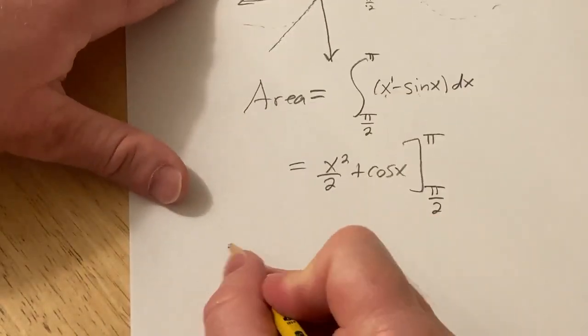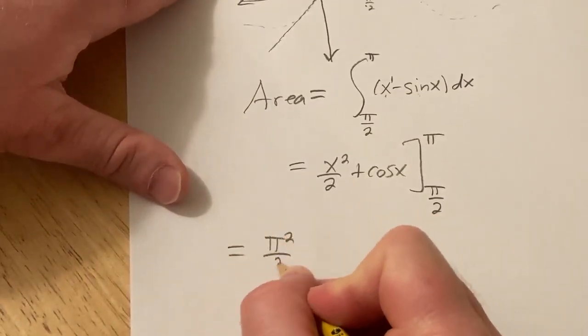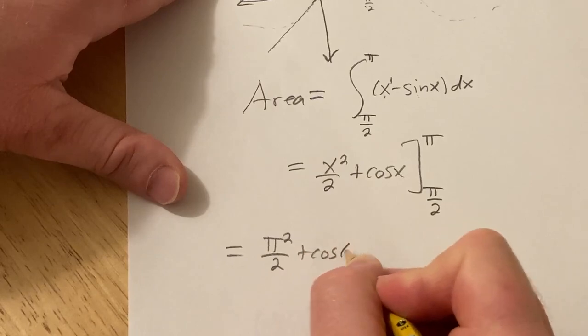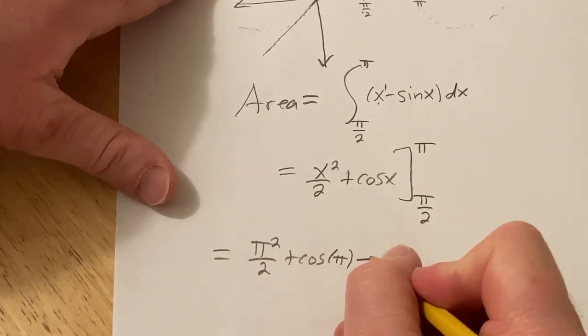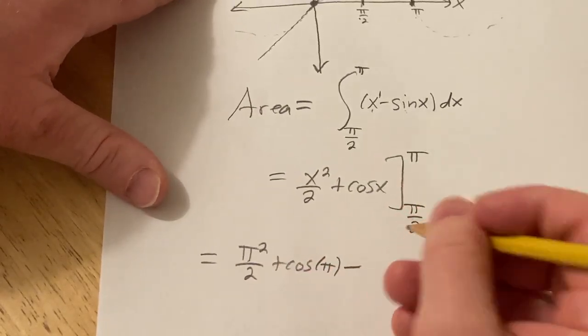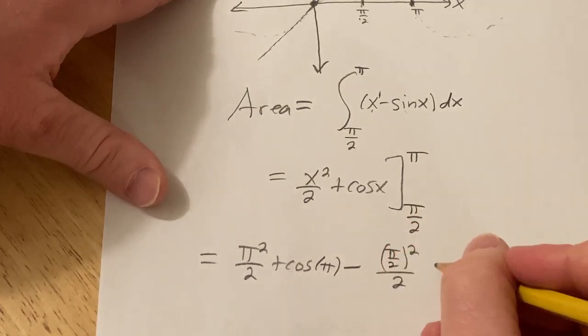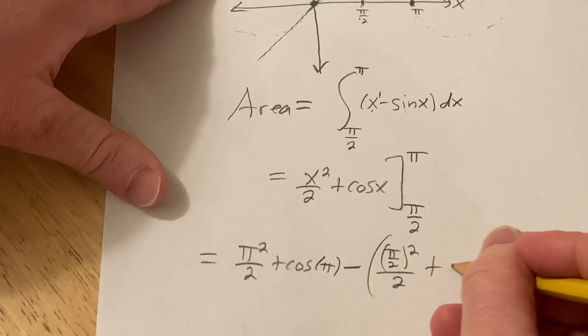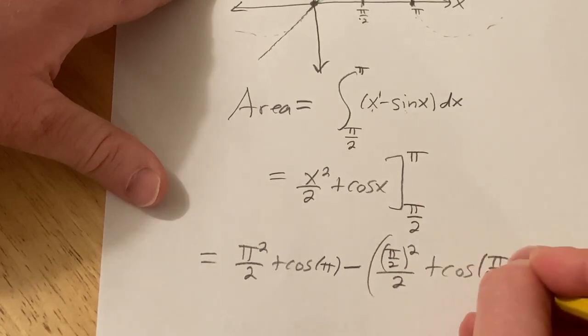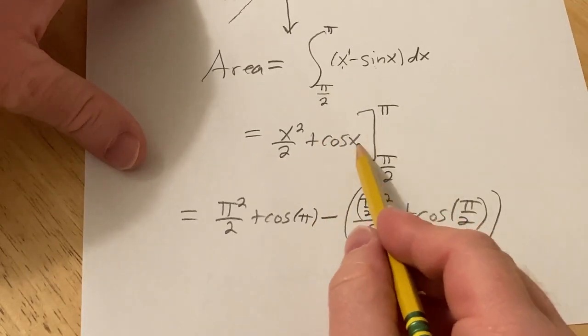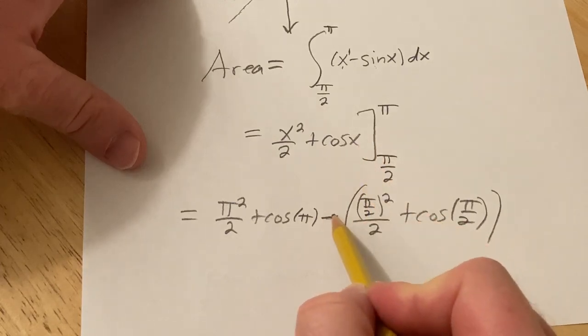You first plug in pi. So this is pi squared over 2 plus the cosine of pi. Subtract, and then you plug in pi over 2. So it'll be pi over 2 squared over 2, and parentheses plus cosine pi over 2. You do have to have a parentheses here, because you're subtracting.